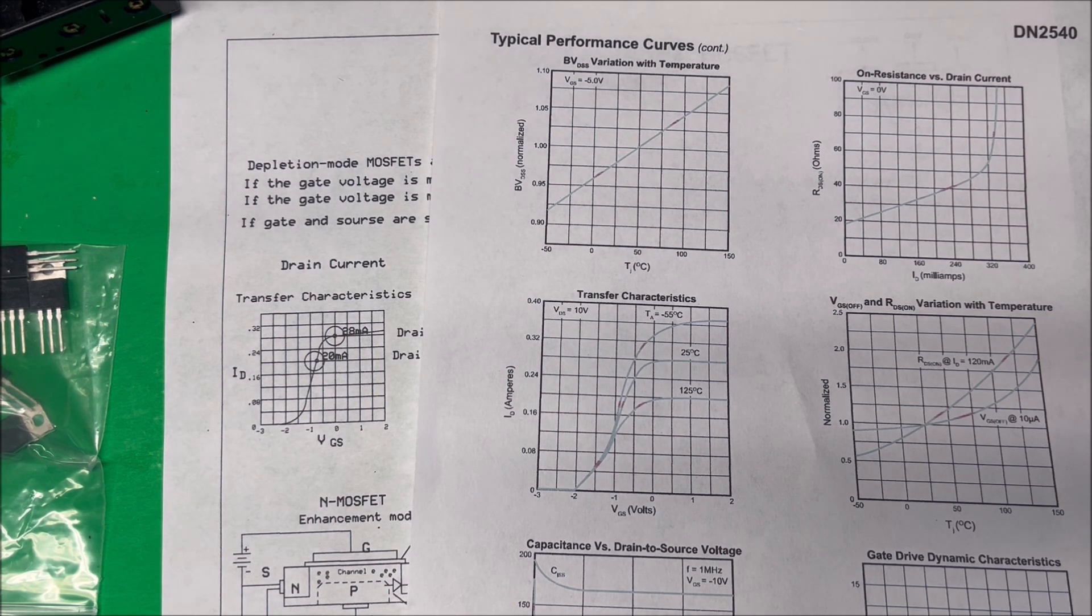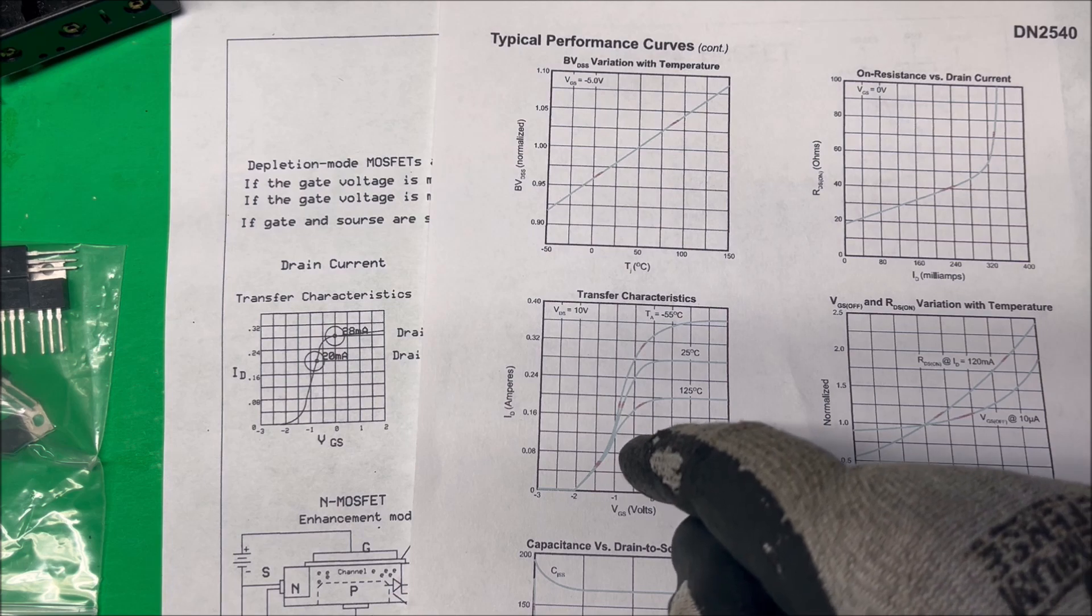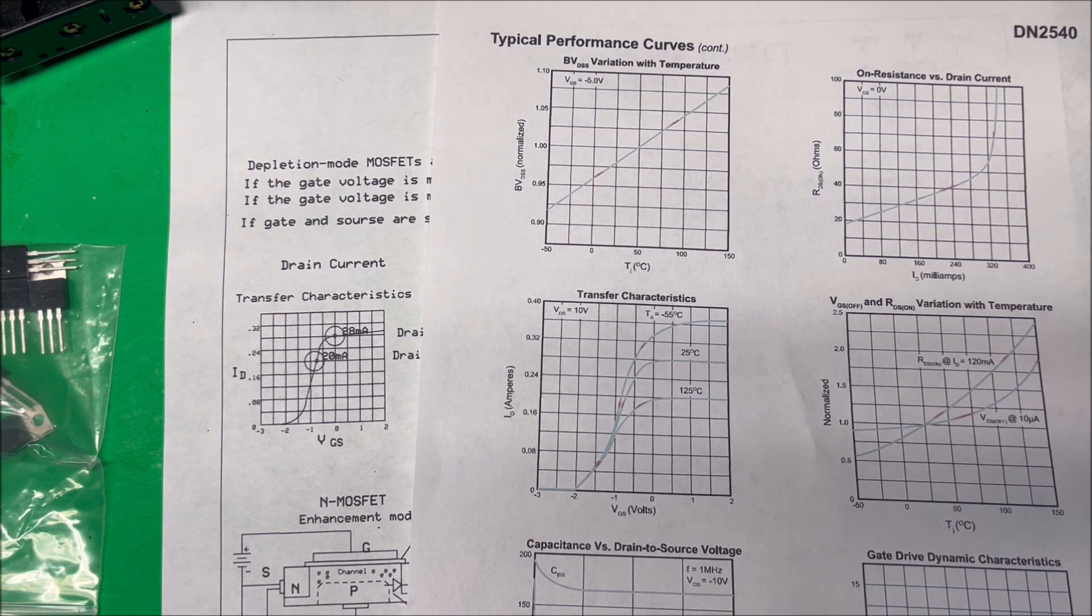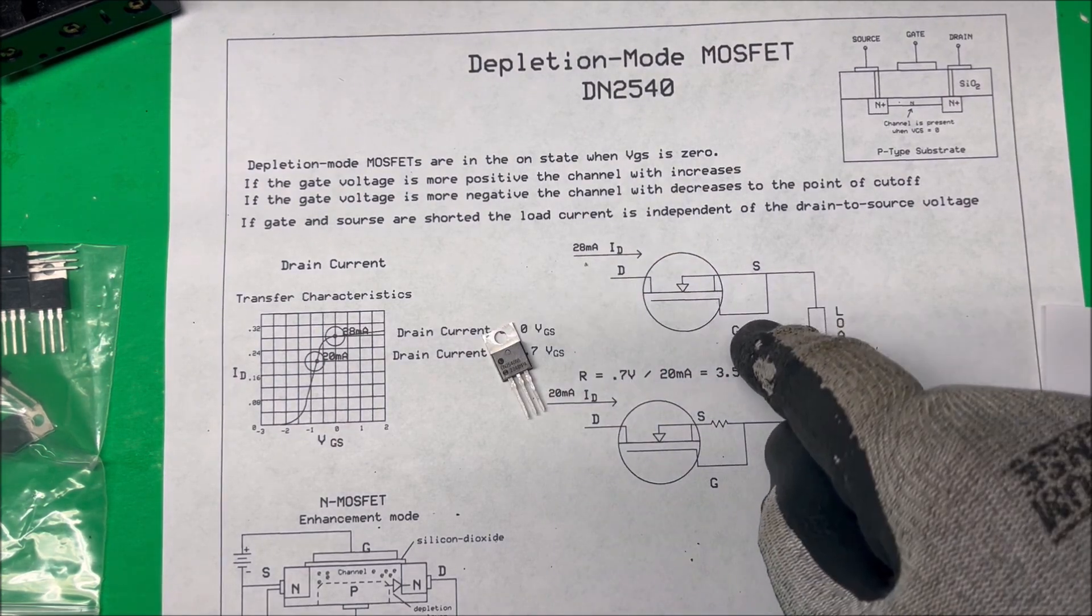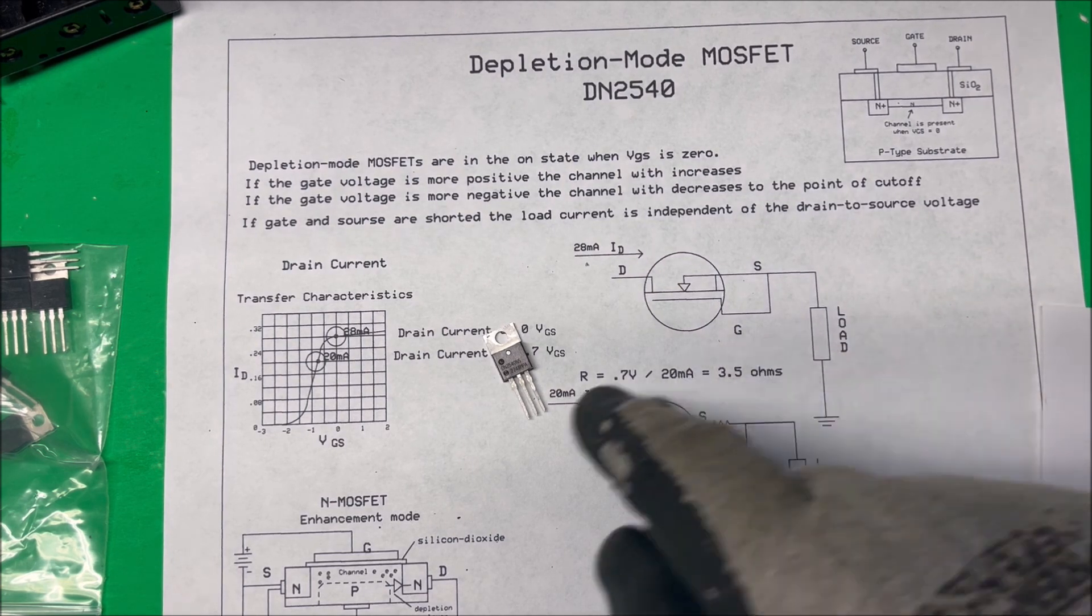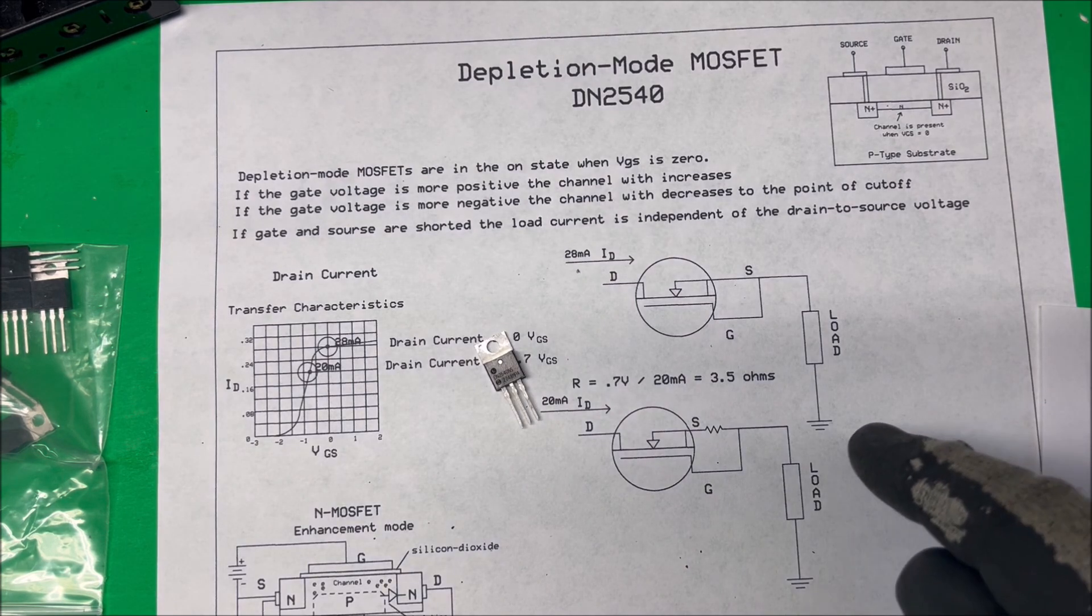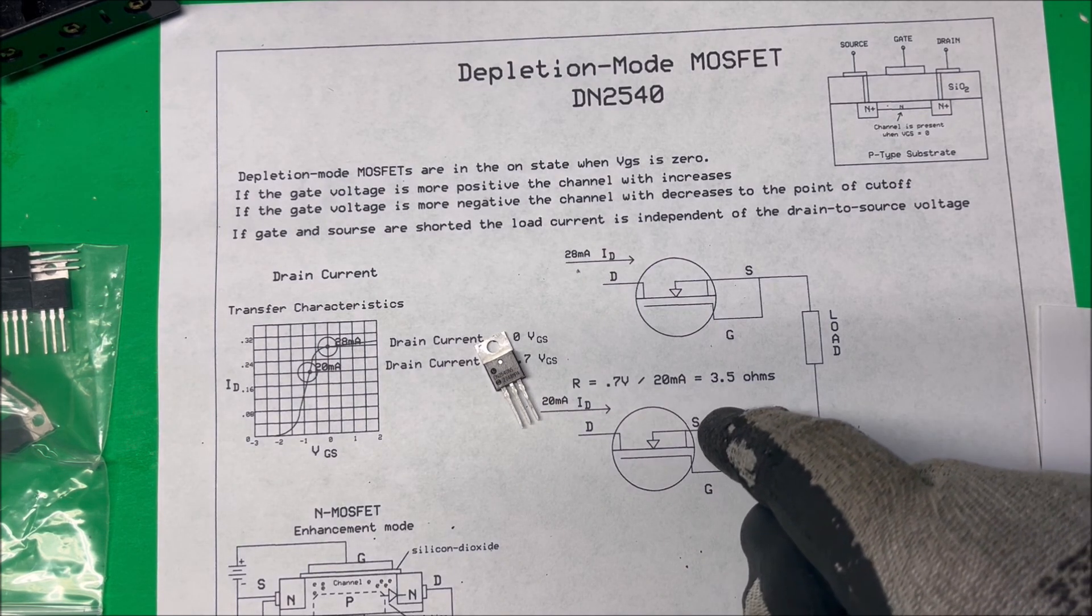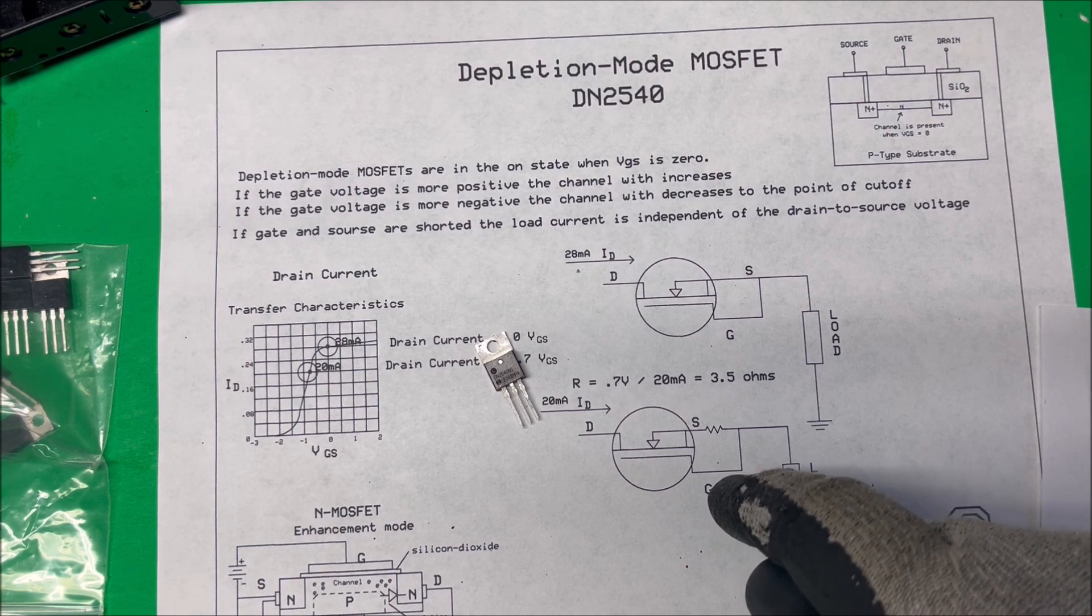And if you decrease the voltage on there, minus one or so, your current will drop off. So we're going to hook it up like this where I'm taking the gate to the source, and we're going to see how much load we have on there. According to the chart, I should have about 28 milliamps. And then if you want to, you can add a resistor in there to lower the voltage on the gate.